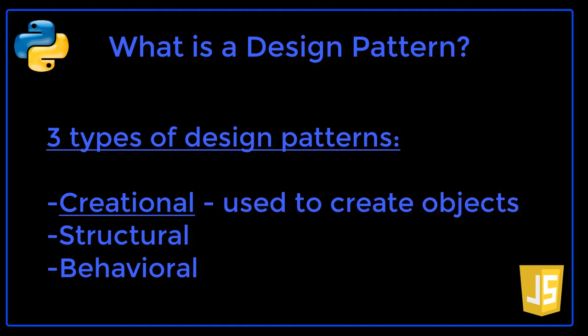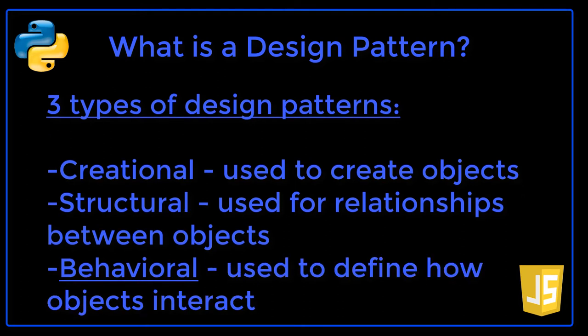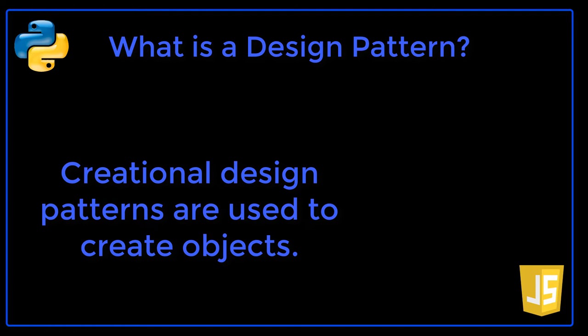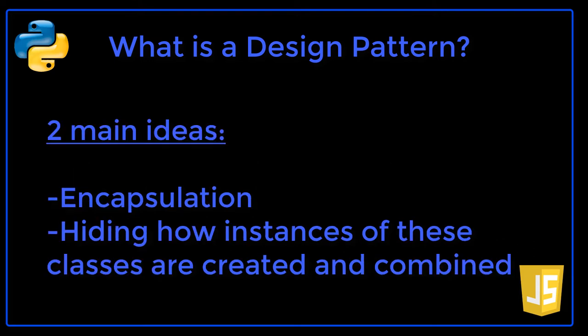Creational design patterns are used to create objects. Structural design patterns are used to provide relationships between objects. Behavioral design patterns help to define how objects interact. There are two main ideas that come into play with creational design patterns. One is encapsulation, specifically encapsulating the knowledge about which classes the system uses. The other is hiding how instances of these classes are created and combined.